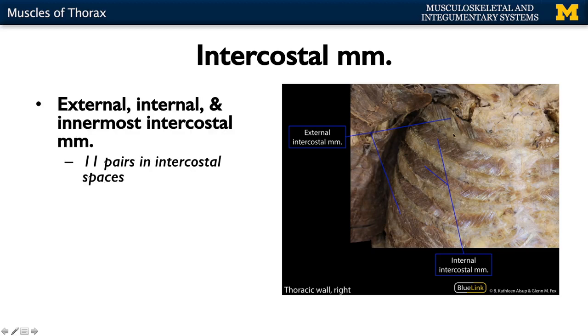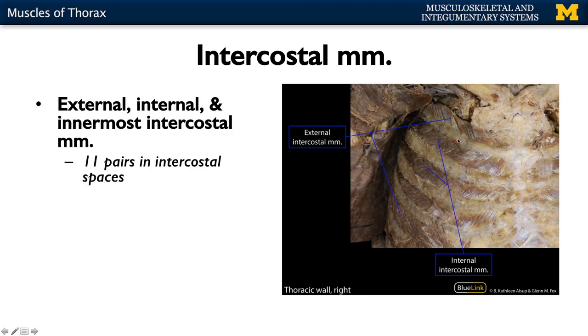Here are the ribs, and those intercostal spaces are filled with muscle. There are three main types: external, internal, and innermost. The external is the most superficial, the internal is right underneath, and the innermost is very closely associated with the internal intercostal muscles.